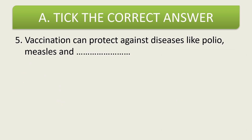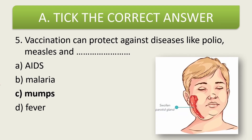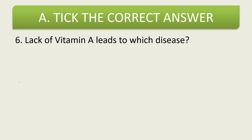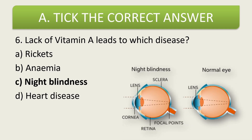Fifth question: vaccination can protect against diseases like polio, measles, and dash — the options are AIDS, malaria, mumps, or fever. The correct answer is mumps, so let us tick mark mumps. Sixth question: lack of vitamin A leads to which disease — rickets, anemia, night blindness, or heart disease? Night blindness is the correct answer.